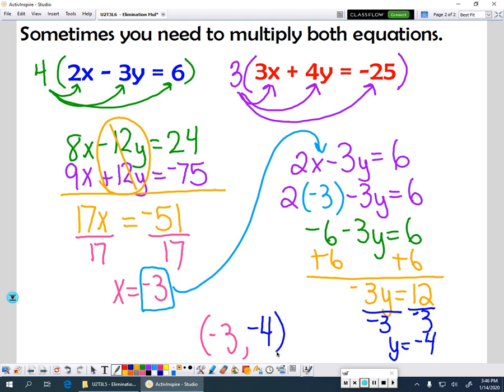So remember, in order to eliminate, you need to have one set of coefficients that have the same number, the same coefficient, and they have to have opposite signs. So variables with the same coefficients, opposite signs. And you can change them around by multiplying. You just have to multiply the entire equation in order to not change its value.